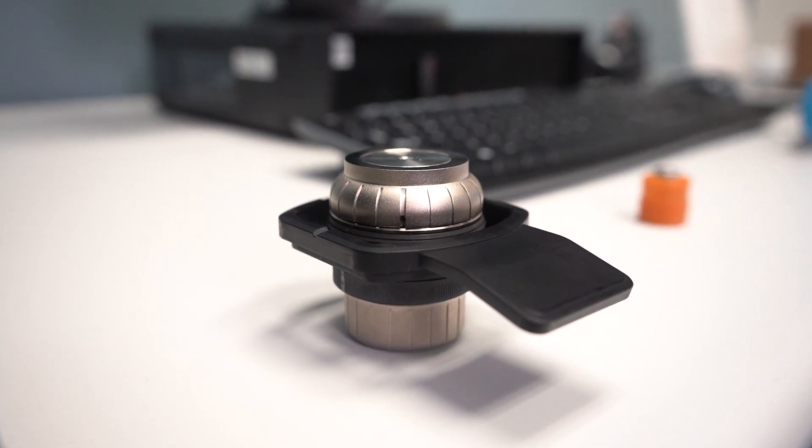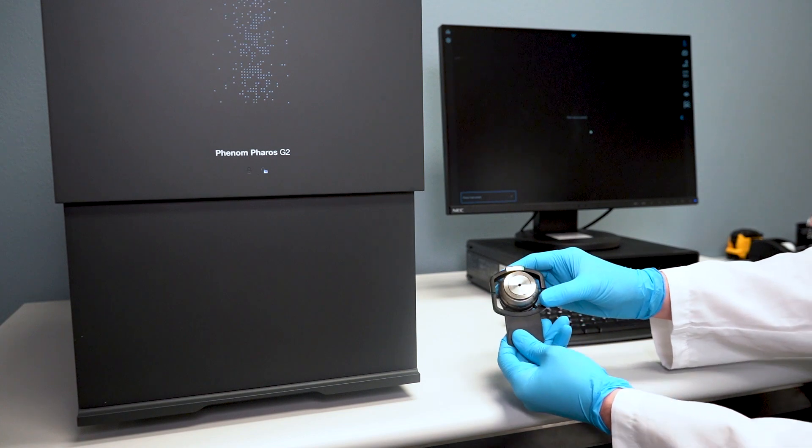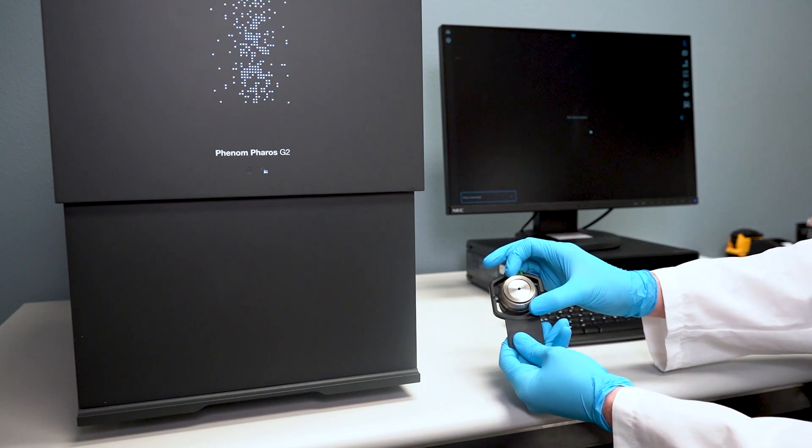Here's the sample holder which holds one sample stub of up to 25 millimeters in diameter. The working distance is adjusted by turning the outer ring.